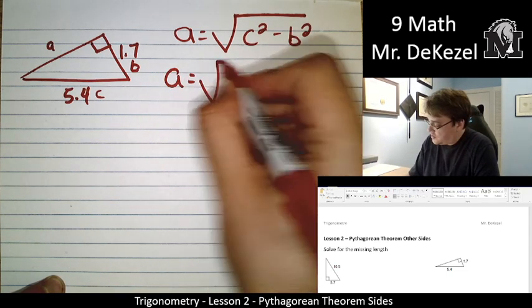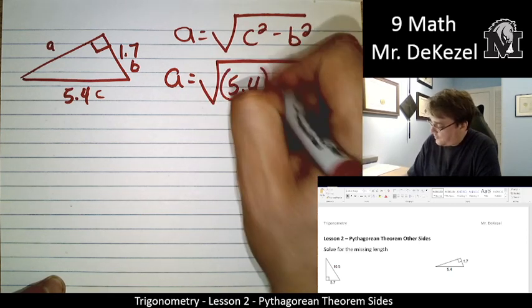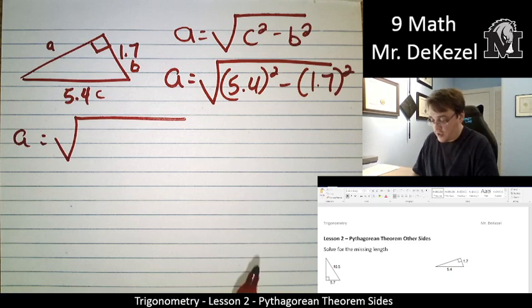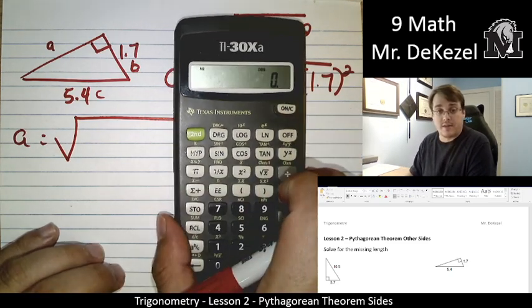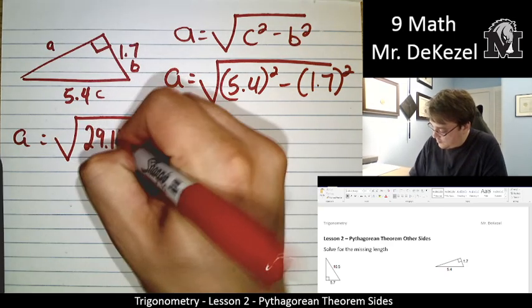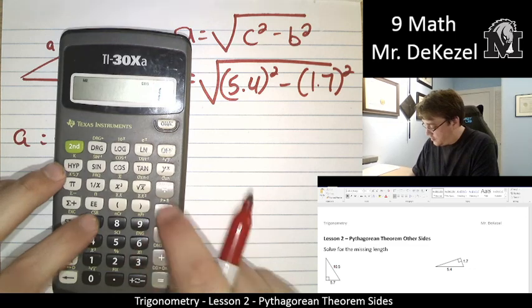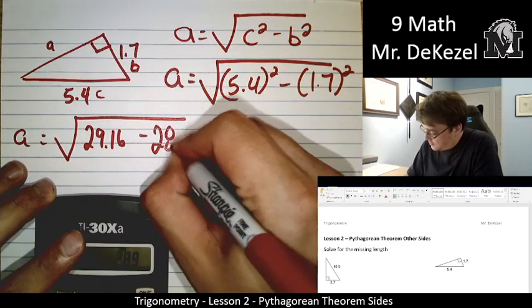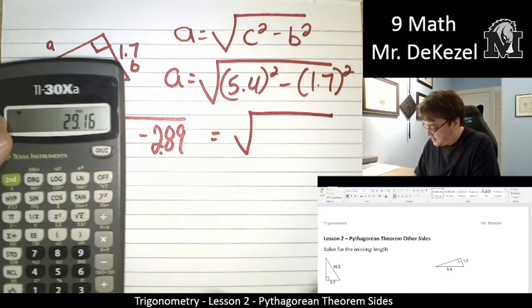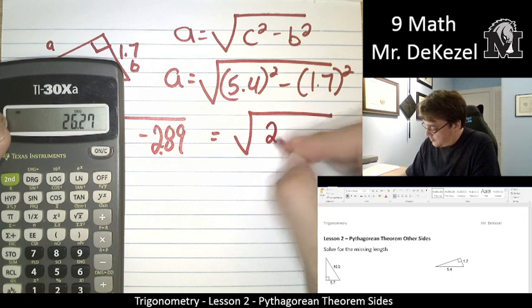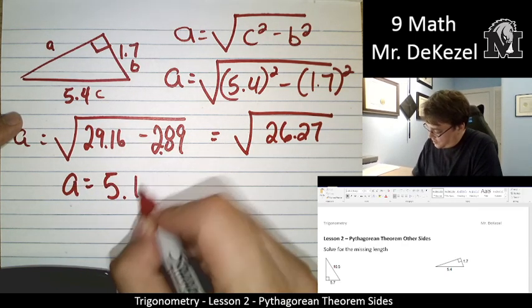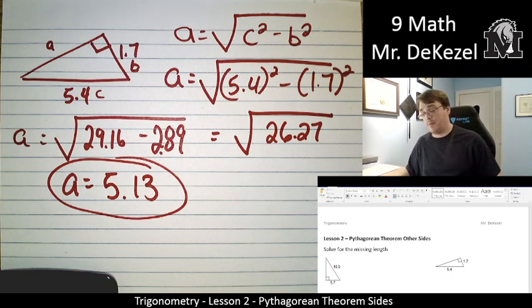So A equals the square root of C squared is 5.4 squared and 1.7 squared. We're going to do these calculations and write them down. So we're looking at 5.4 times 5.4, 29.16, subtract 1.7 squared, 2.89. That's equal to, we're going to take 29.16, subtract 2.89. And of course, at the end, take the square root of that. Our side is 5.13. And again, that makes sense. It's not the longest because the hypotenuse is the longest.